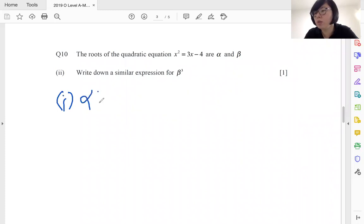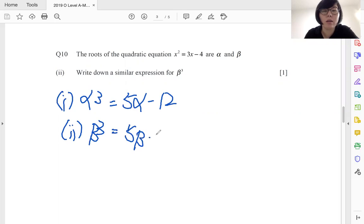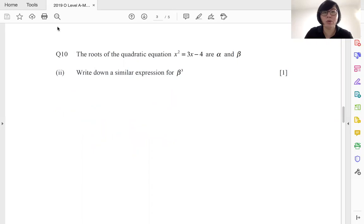Now, from part one we have already shown this: alpha cube is equal to 5 alpha minus 12. That was from part one. So part two, if they ask you for beta cube, simple, just substitute your alpha with beta. Done, one mark for that.